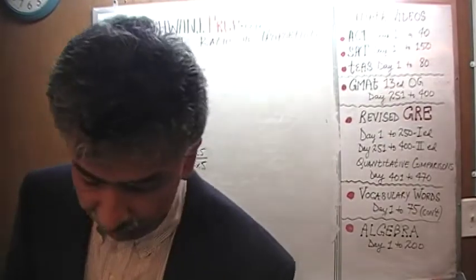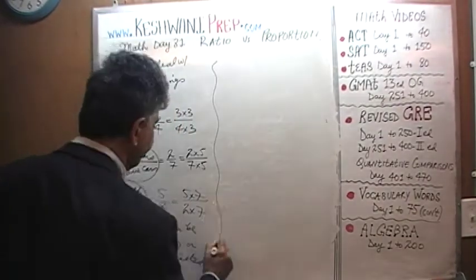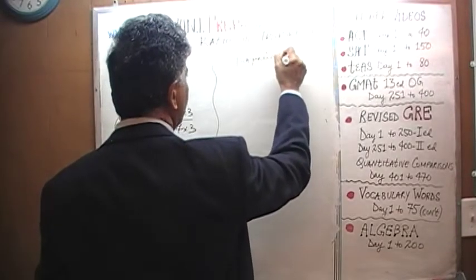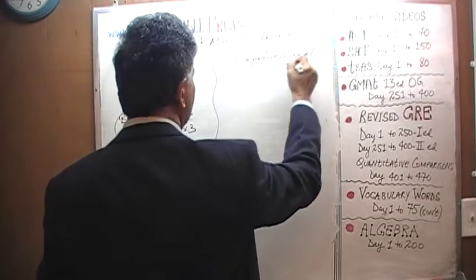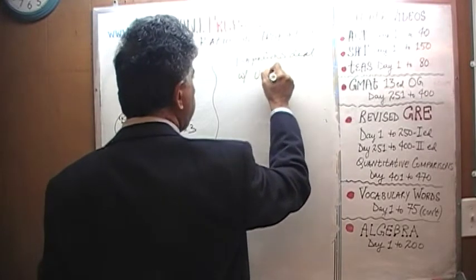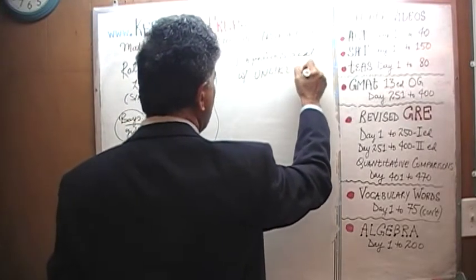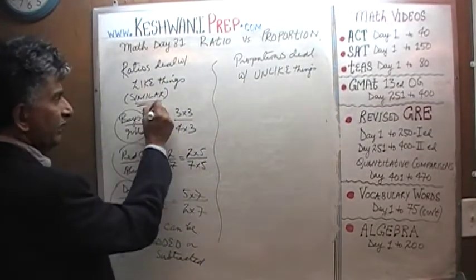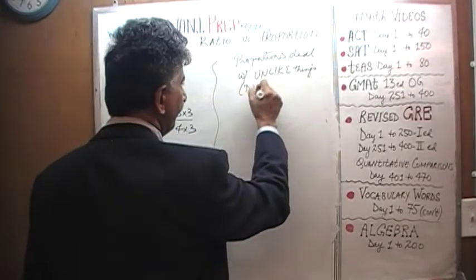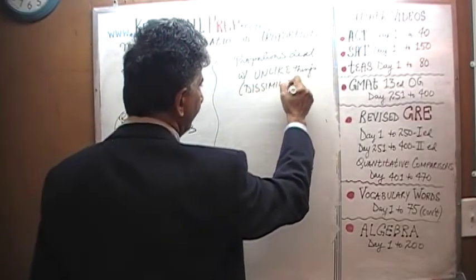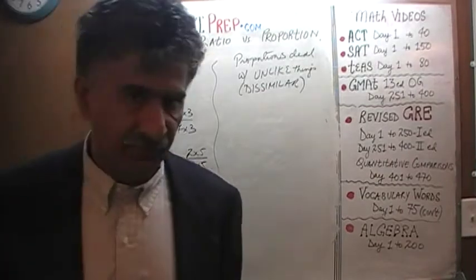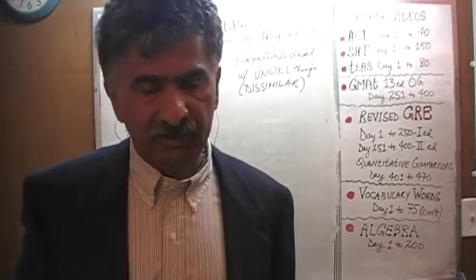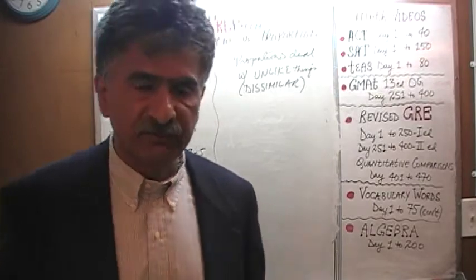In proportions, on the other hand, proportions deal with unlike things — things that are dissimilar. These things cannot be added or subtracted because they are dissimilar, and that is what constitutes a proportion.